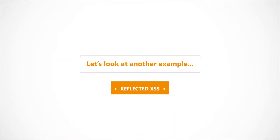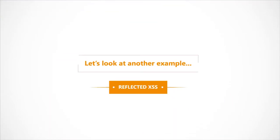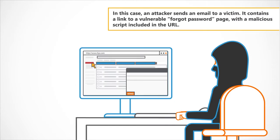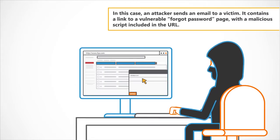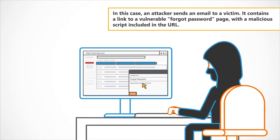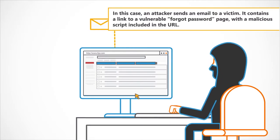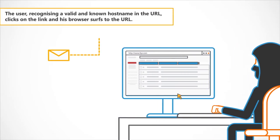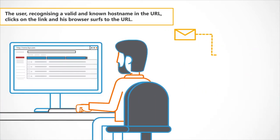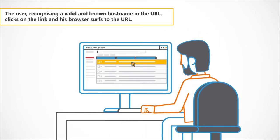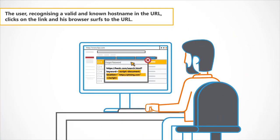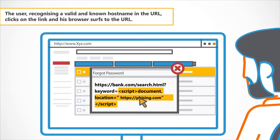Let's look at another example. In this case, an attacker sends an email to a victim. It contains a link to a vulnerable forgot password page with a malicious script included in the URL. The user, recognising a valid and known hostname in the URL, clicks on the link and his browser surfs to the URL.